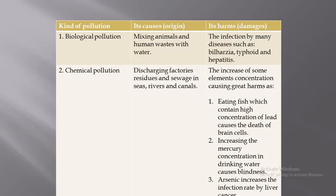Chemical pollution is the discharging of factories, residues, and sewage into seas, rivers, and canals. The increase in concentration of some elements causes great harm — for example, eating fish that contains high concentration of lead may cause death of brain cells. Increasing mercury concentration in drinking water may cause blindness. Arsenic increases the infection rate of liver cancer.